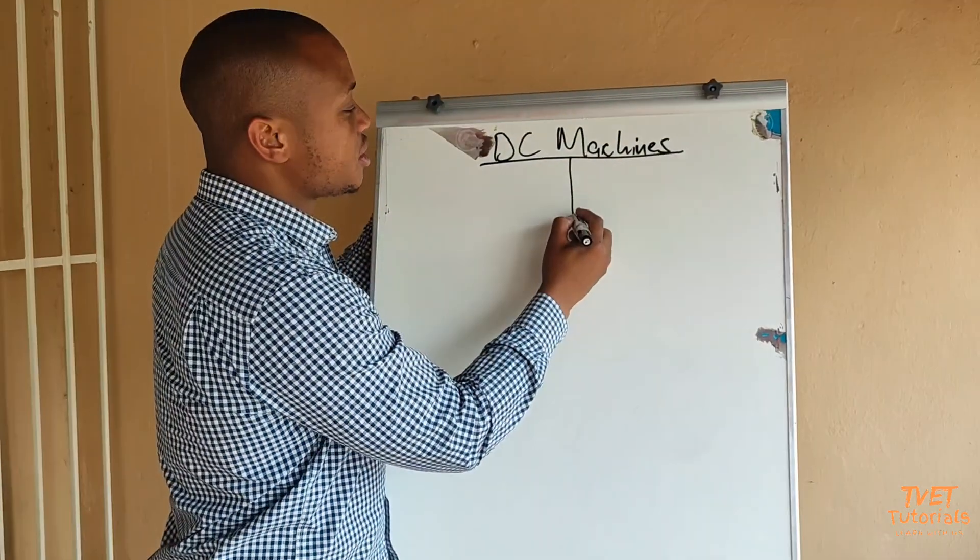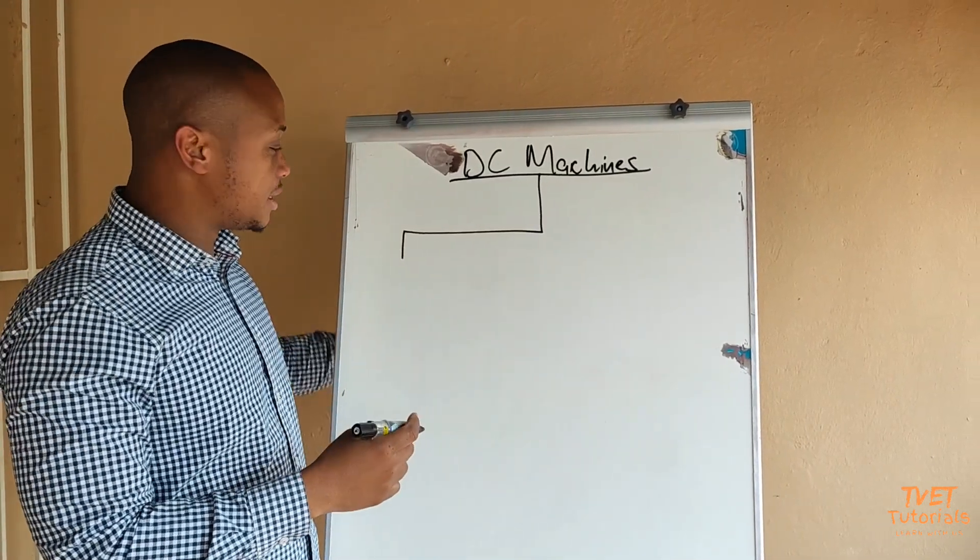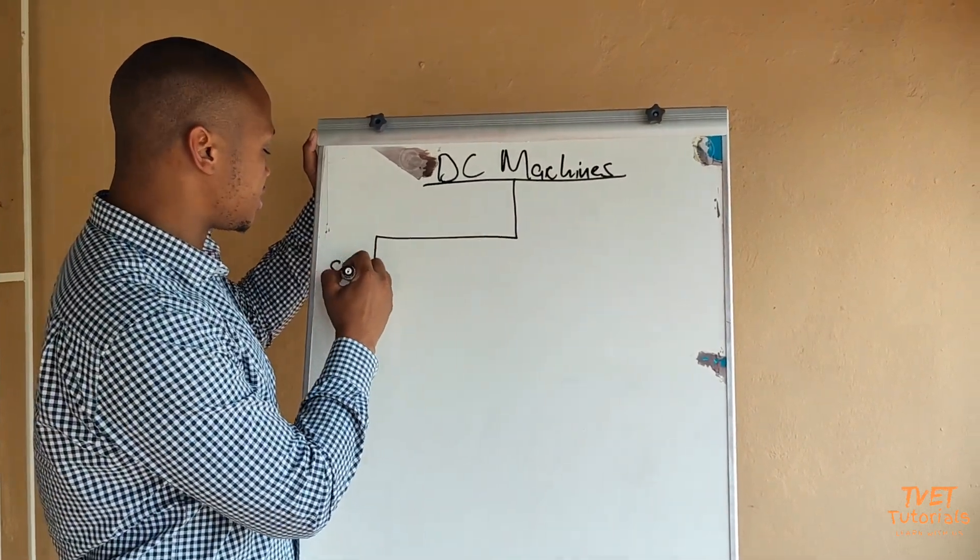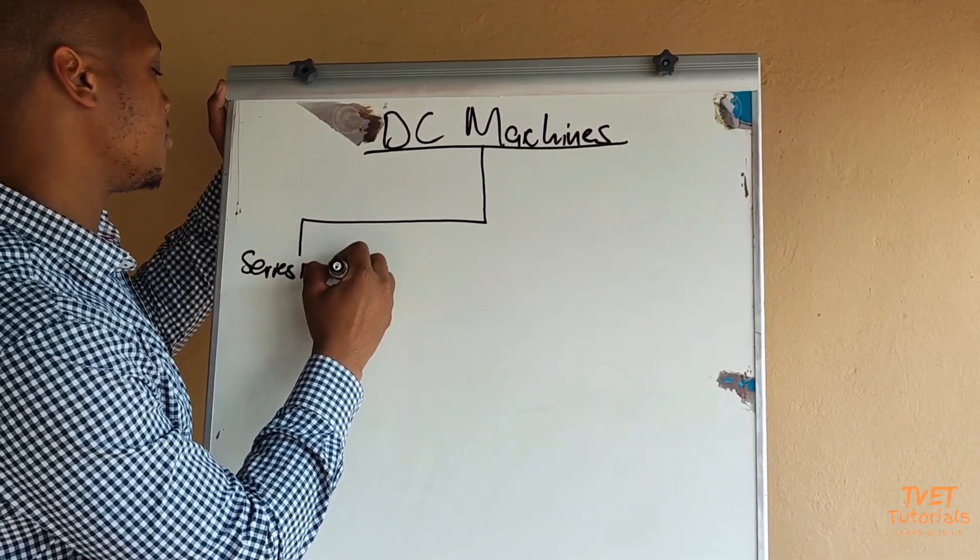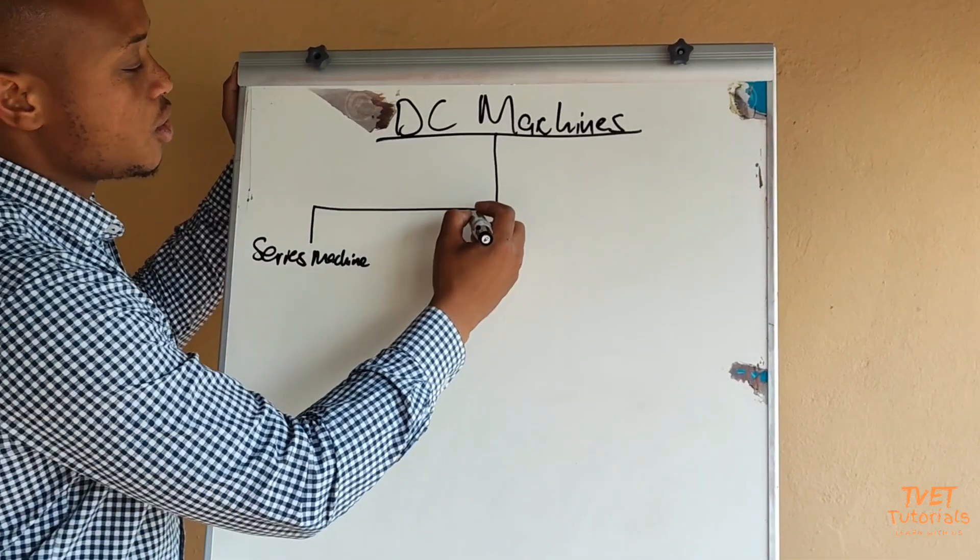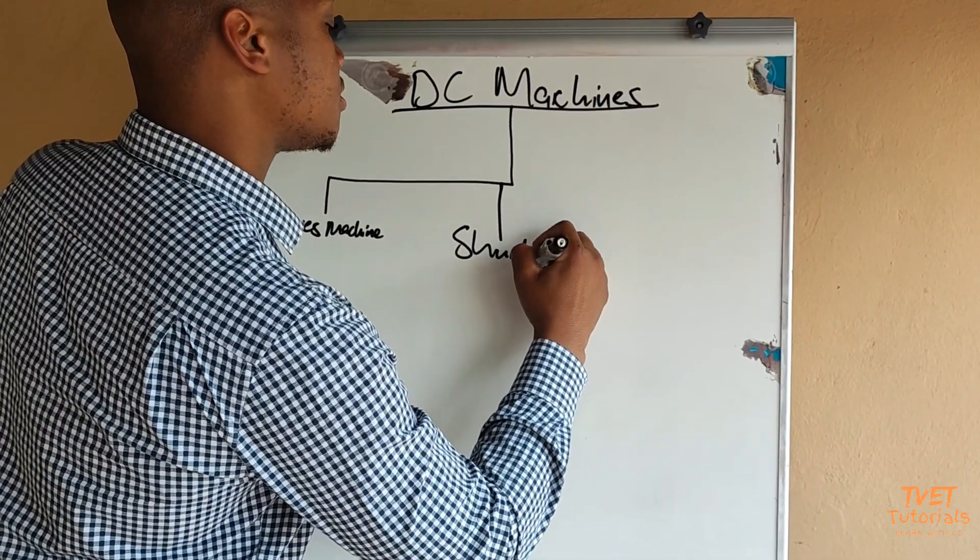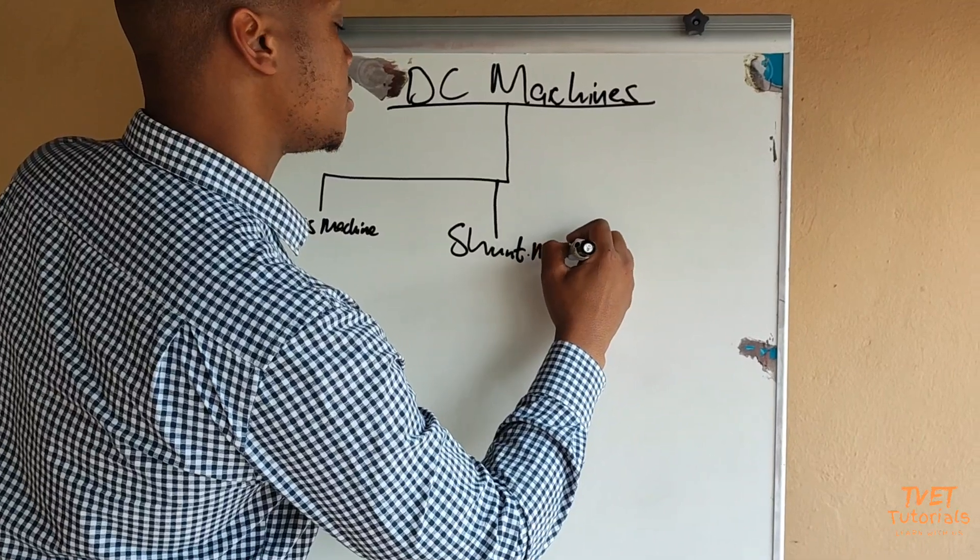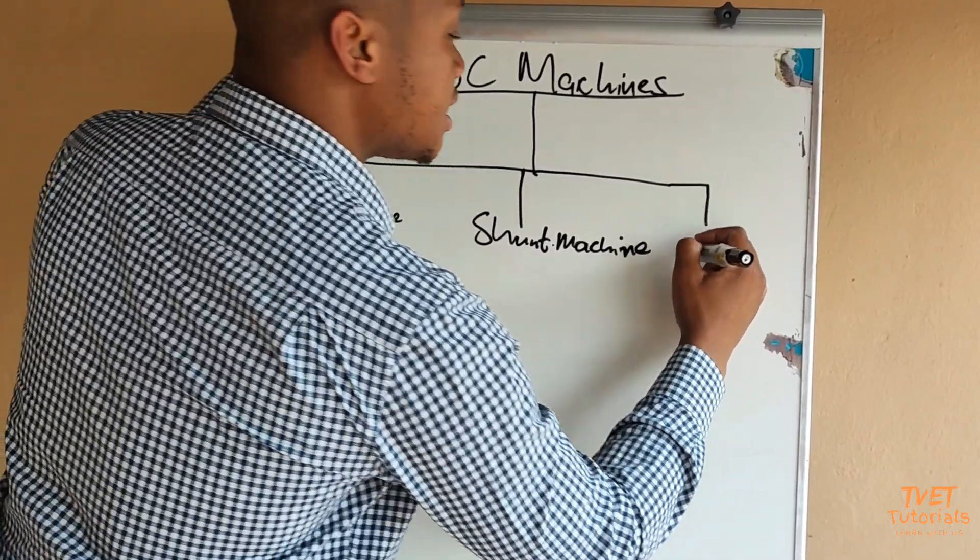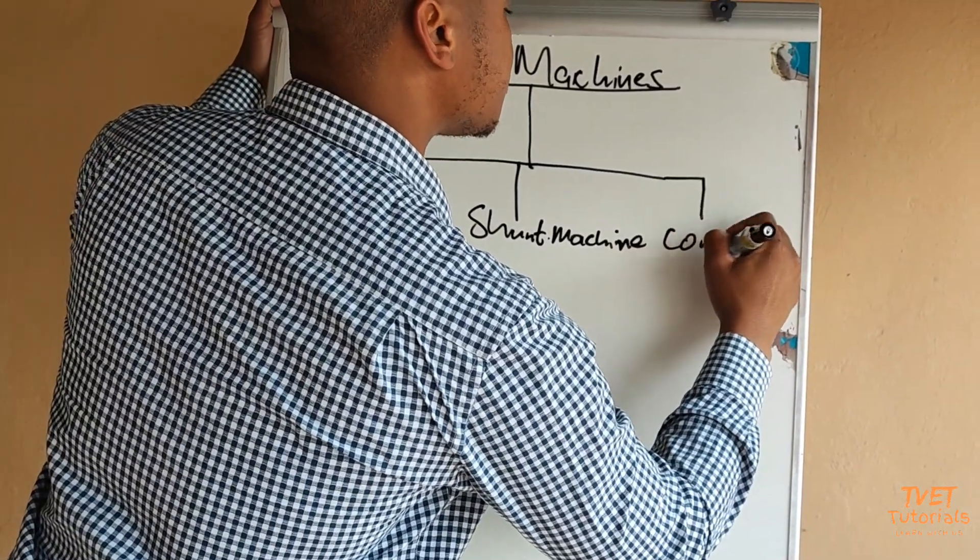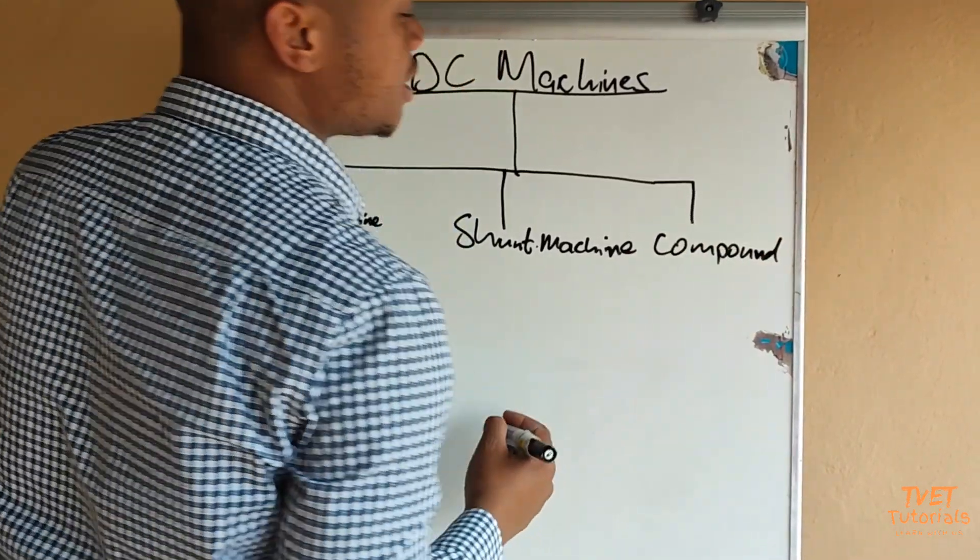So on DC machines we've got three main types of machines according to the field windings. We've got the series connected machine, the shunt connected machine, and lastly the compound connected machine.